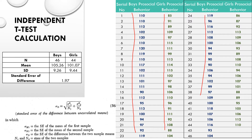There are a total of 46 boys and 44 girls. First, we count the total number of individuals n in each group — 46 and 44. Then we have to calculate the mean value.